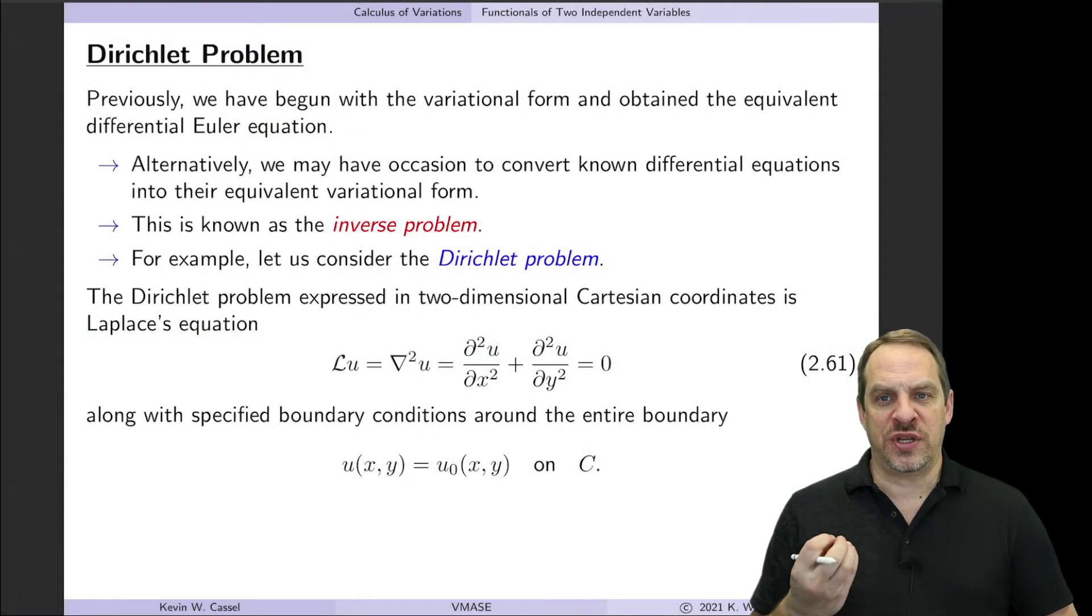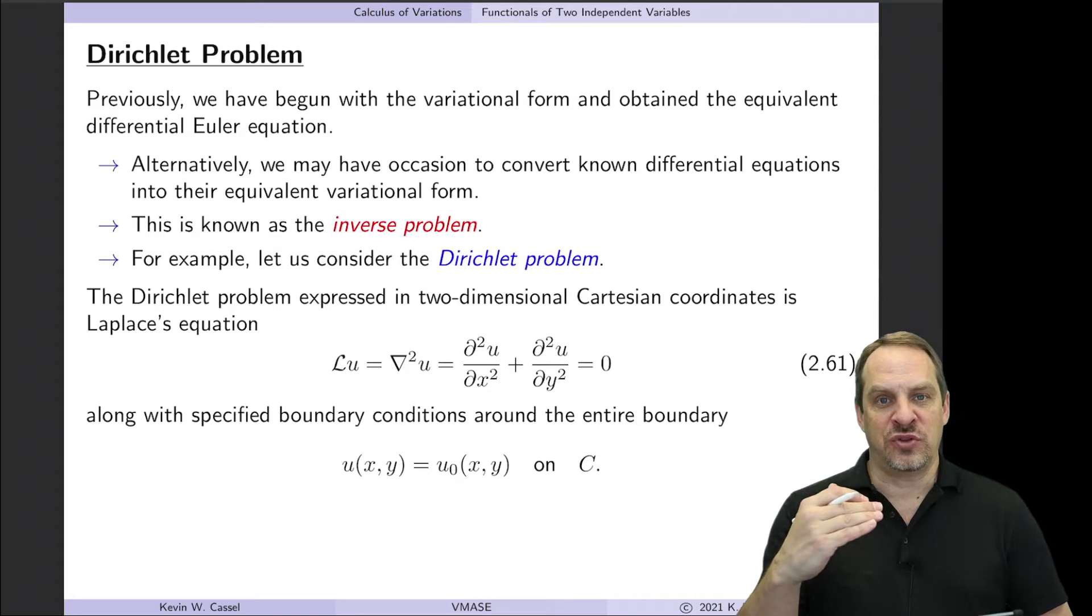We've been considering in the last couple of videos the case where we have a functional involving two independent variables, so a two-dimensional problem. We've done some examples, and I want to do another example, but I actually want to do it backwards. So this is the inverse variational problem.